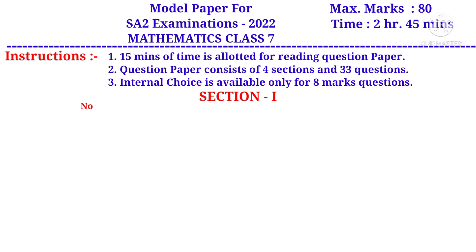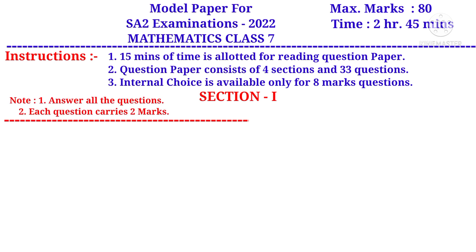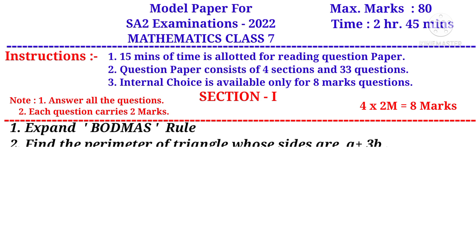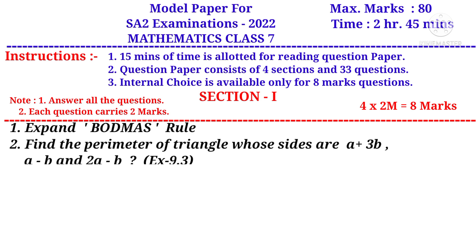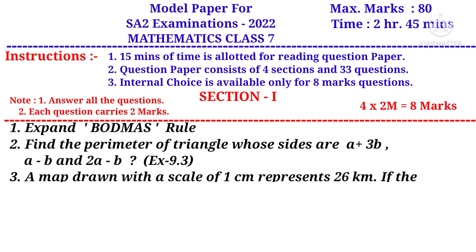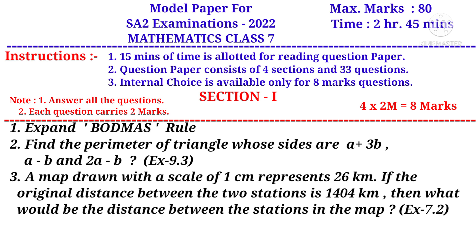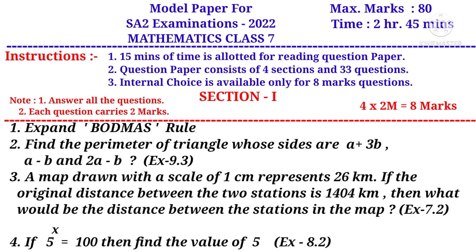Section 1: Answer all the questions. Each question carries 2 marks. There are 4 questions, so 4 into 2 marks is 8 marks. Question number 1: Expand BODMAS rule. It is a question from the first chapter, Integers. Number 2: Find the perimeter of a triangle whose sides are A plus 3B, A minus B, and 2A minus B. It is a question from the 9th chapter, Algebraic Expressions.